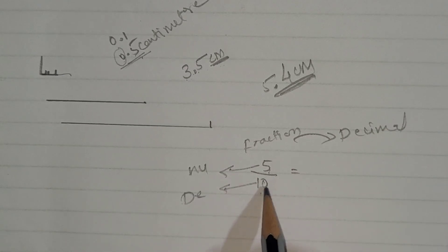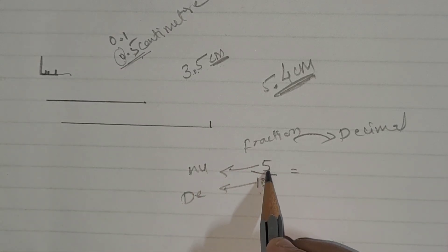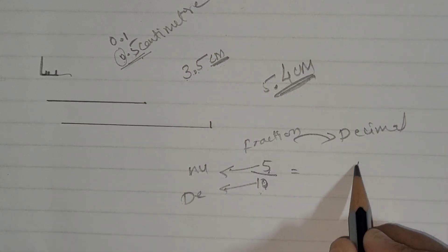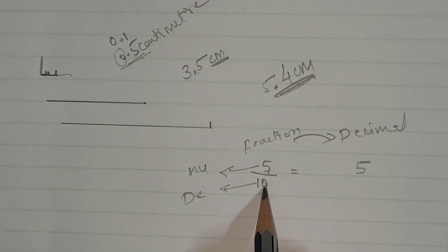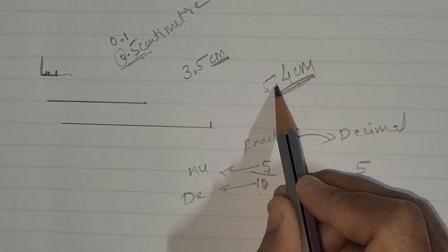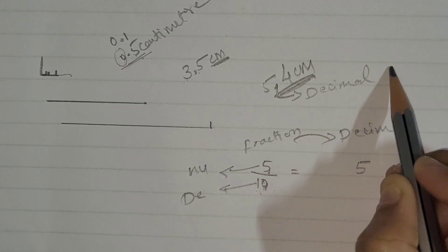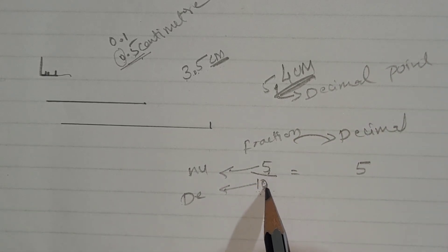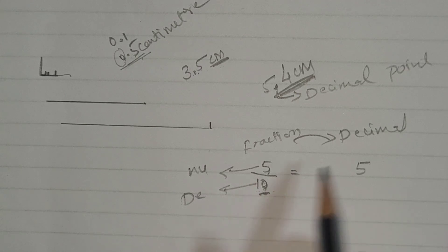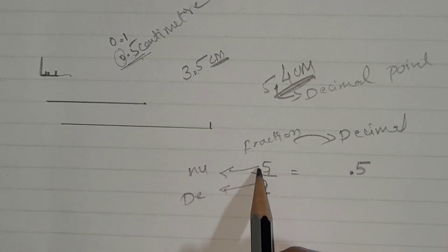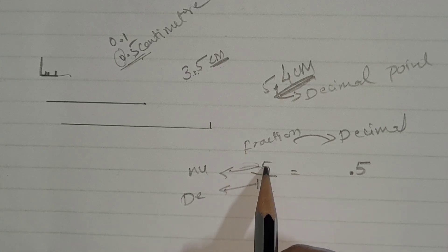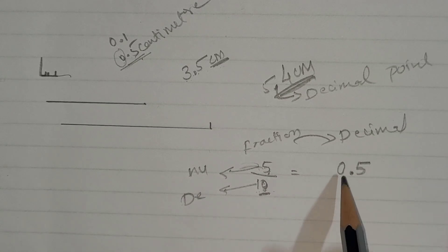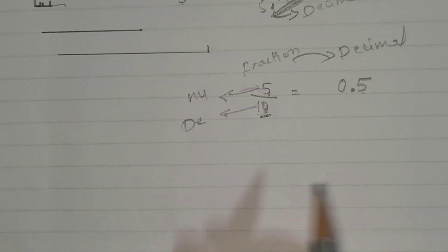See how many zeros are in the denominator - there is one zero. First, write the numerator as it is: five. Now, since there is one zero in the denominator, you place the decimal point after one digit. We have only a single digit five, so put a zero before it. The answer is 0.5 or point five.